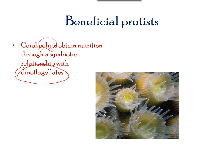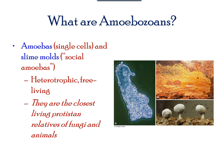Amoebas, like all protists, are single-celled organisms. They have the ability to alter their shape using false arms called pseudopods. They are also heterotrophs and free living.